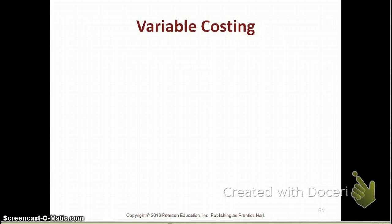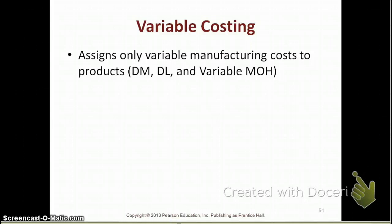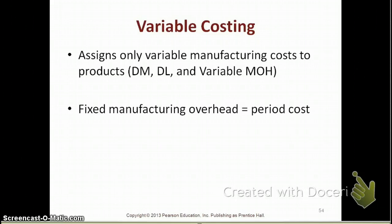Under variable costing, we assign only variable manufacturing overhead cost to the product. You separate your variable and fixed manufacturing overhead. Direct materials and direct labor are considered variable because they vary with the volume of production. You also split your manufacturing overhead into variable and fixed components — variable manufacturing overhead is assigned to product cost, while fixed manufacturing overhead is treated as a period cost.